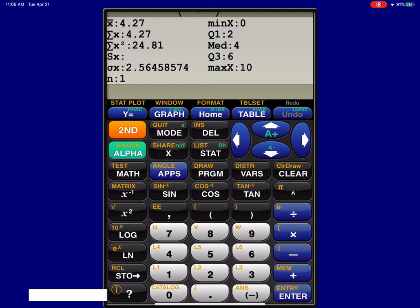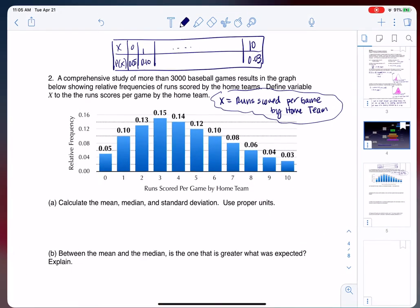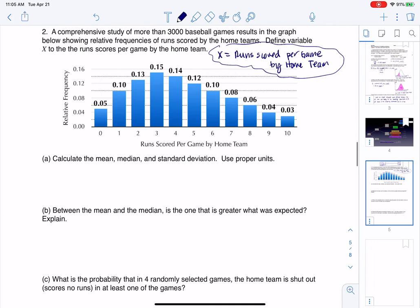So I'm going to go ahead and take those three statistics and put them on my answer, so I have that the mean is 4.27 runs, the standard deviation was 2.56 runs, and then the median was 4 runs. Now I say use proper units because what is my variable? It's runs scored. So on average the home team scores 4.27 runs. When they deviate from that 4.27, they deviate by about 2.56 runs, and the median is 4 runs.